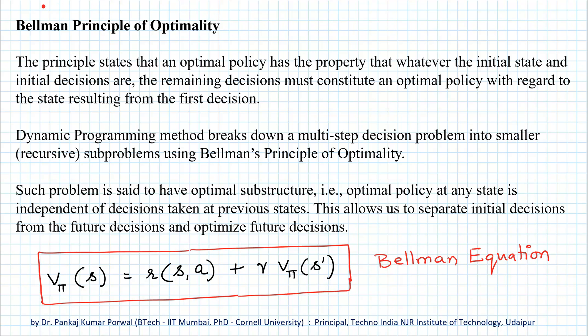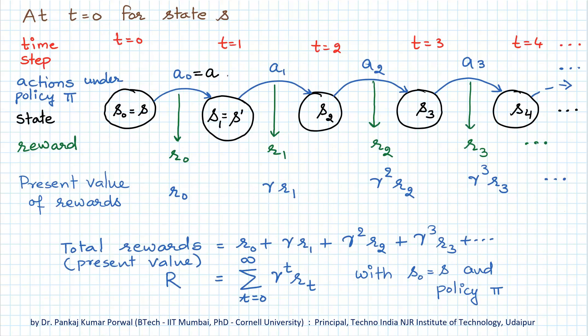In this session, I am going to explain the Bellman principle of optimality for reinforcement learning problems. In a reinforcement learning problem, our objective is to maximize the expectation of the present value of total rewards.